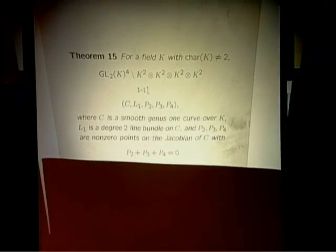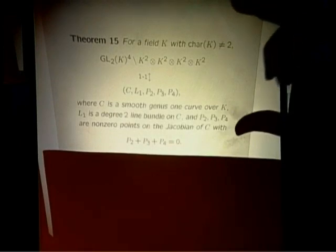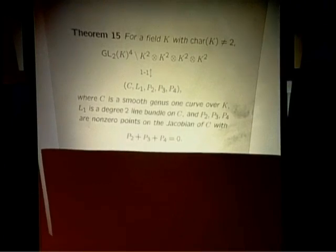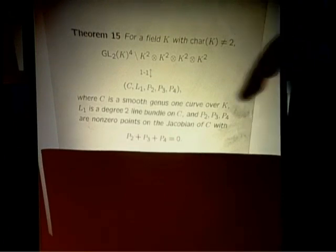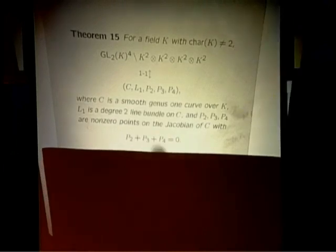Once you analyze what the relations are between these various paths starting at a given curve C_{ij}, you work out there are two independent points on the Jacobian, and the rest are related. So here's the theorem that one ends up proving — joint with Wei-Ho. All these parametrizations are joint work with Wei-Ho.